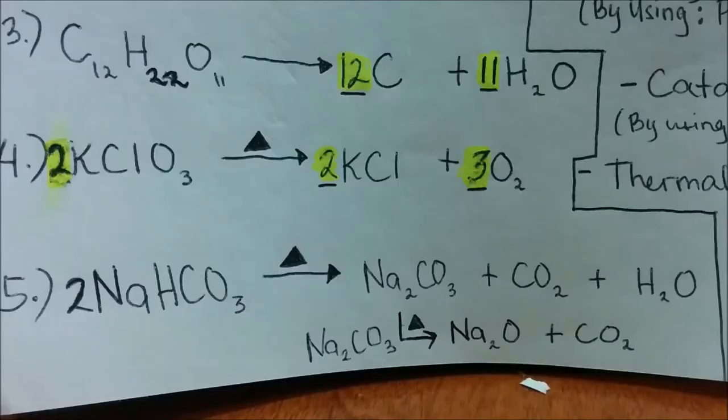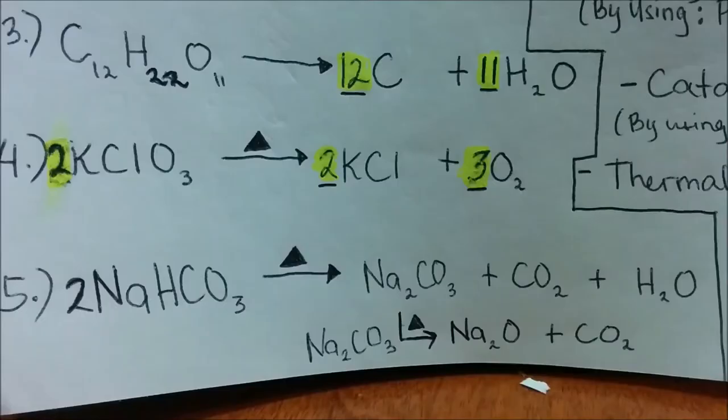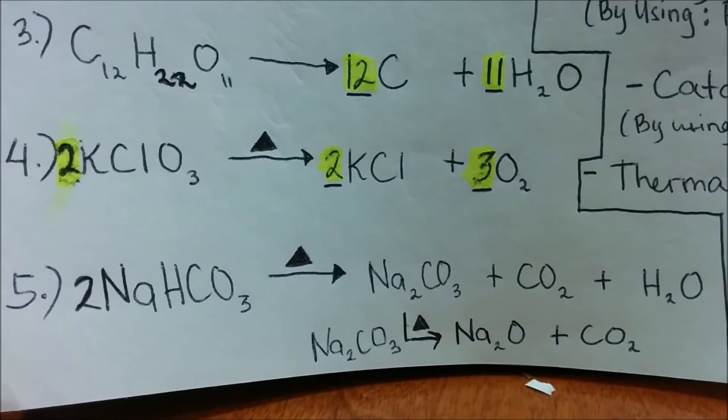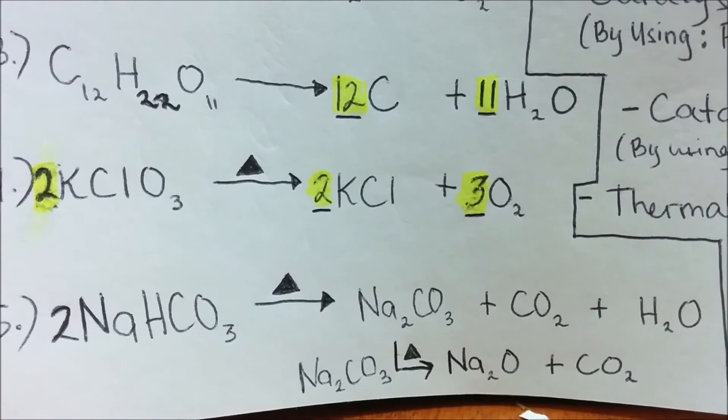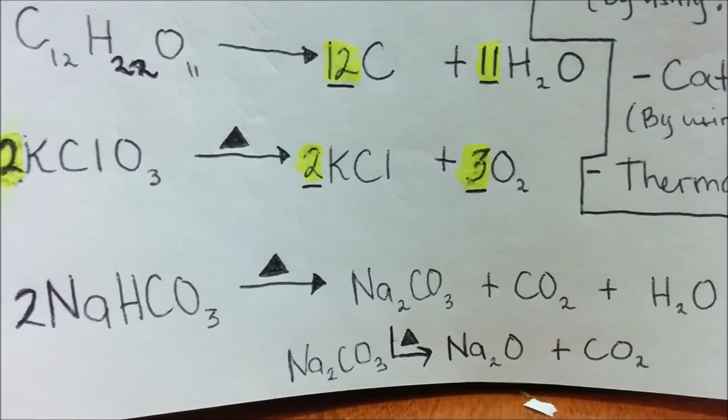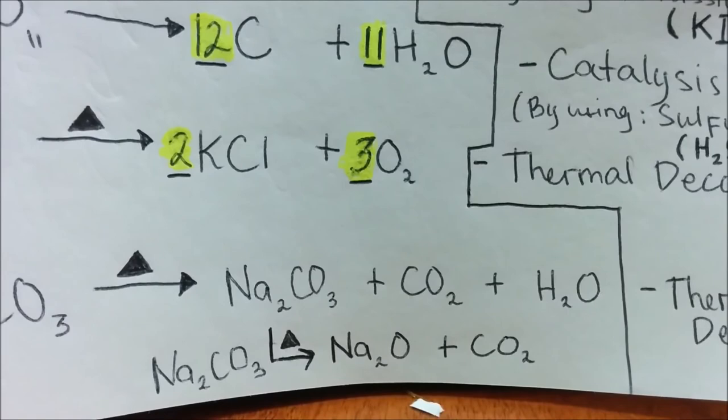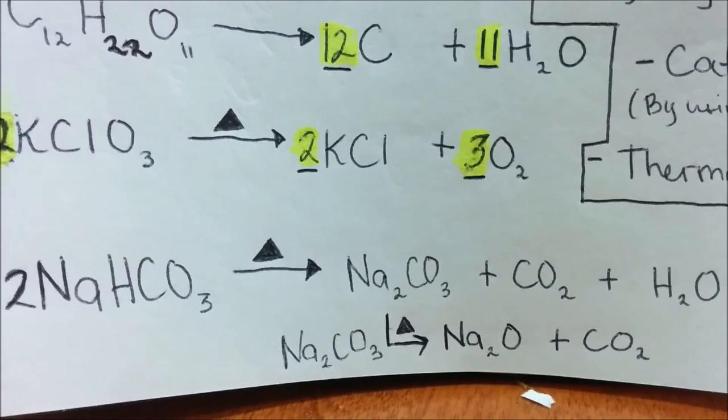My fifth example is sodium bicarbonate. We will be using thermal decomposition in order to break down sodium bicarbonate, also known as baking soda. Sodium bicarbonate is decomposed into sodium carbonate, plus carbon dioxide and water. Notice that sodium carbonate can also be broken down into sodium oxide, which is a highly reactive material, plus carbon dioxide.